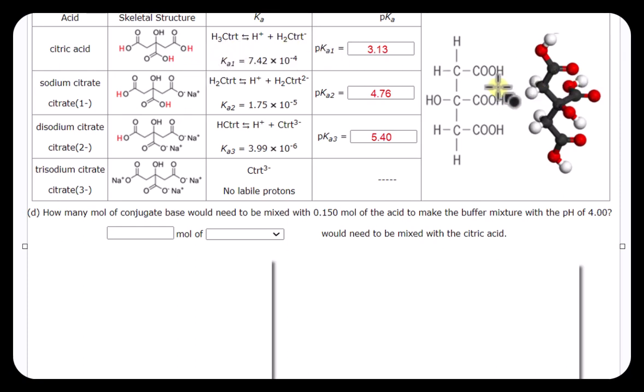where we just have one proton leave, has a Ka of 7.4 times 10 to the negative 4. It's a weak acid, but it's actually more acidic than acetic acid.